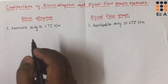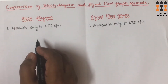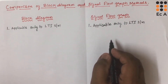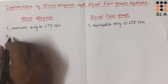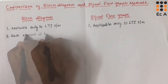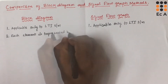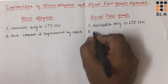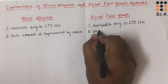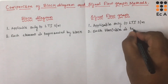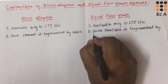In block diagram method, each element is represented by the block. In signal flow graph method, each variable is represented by the node.